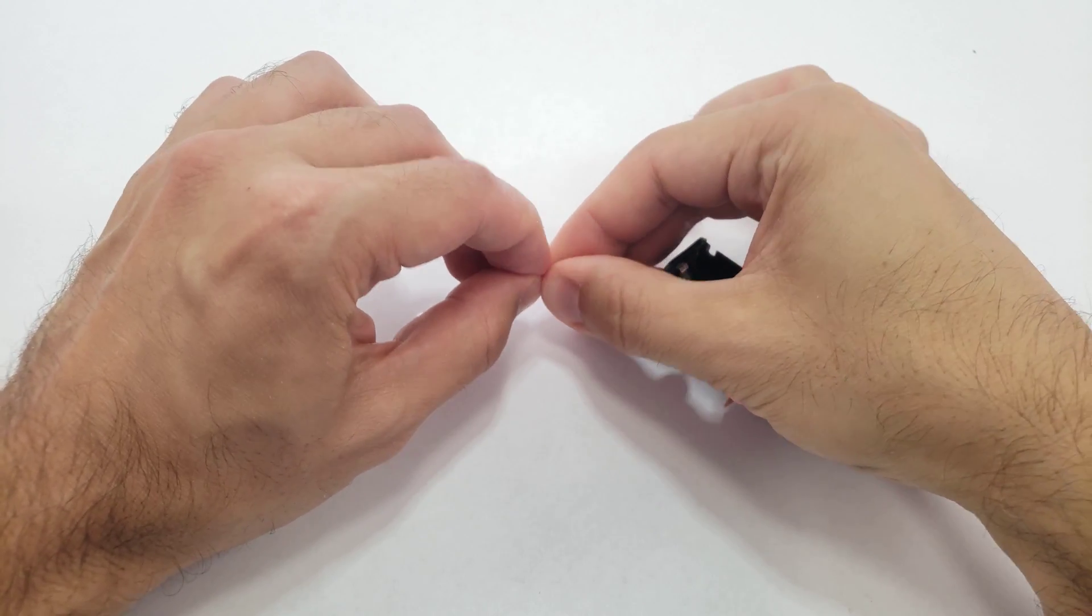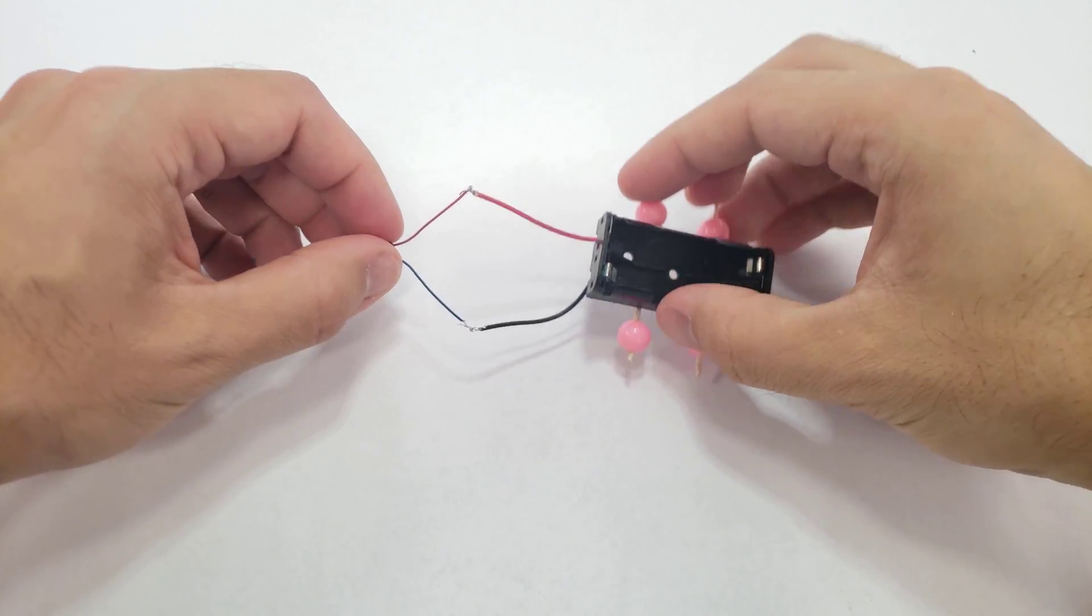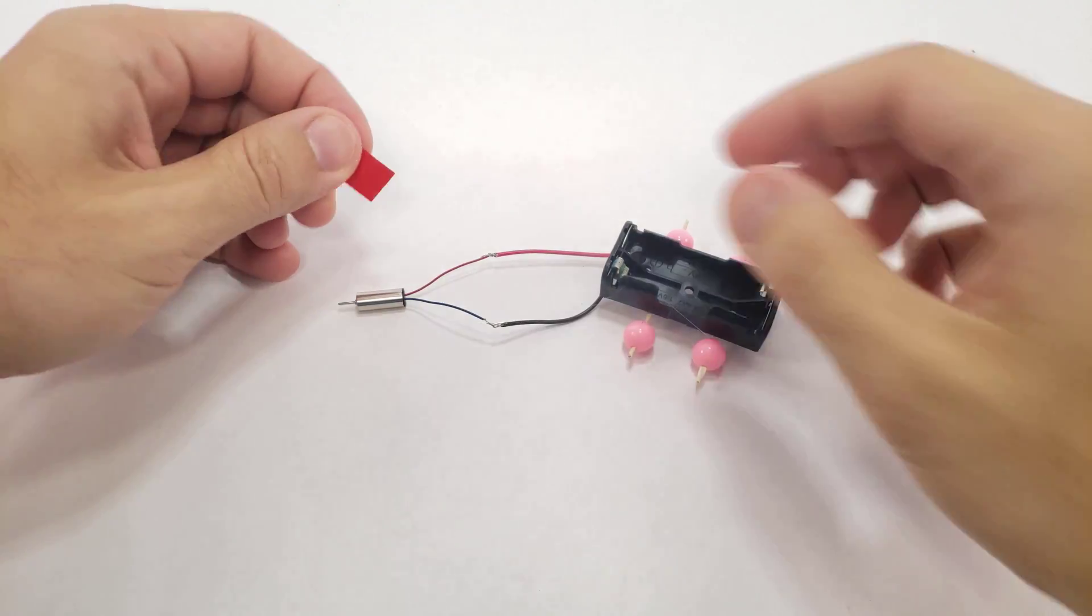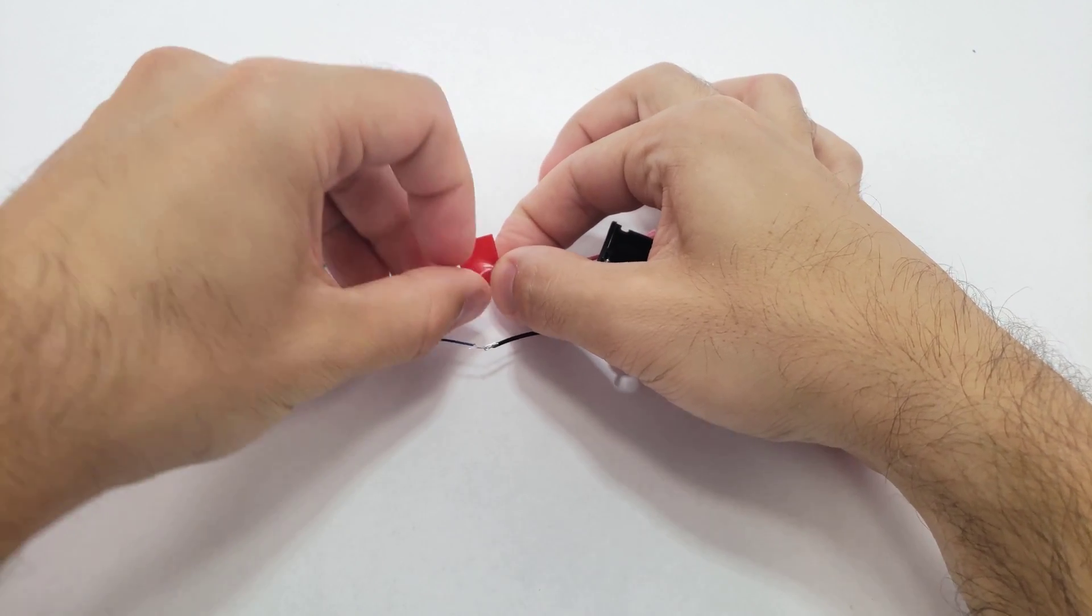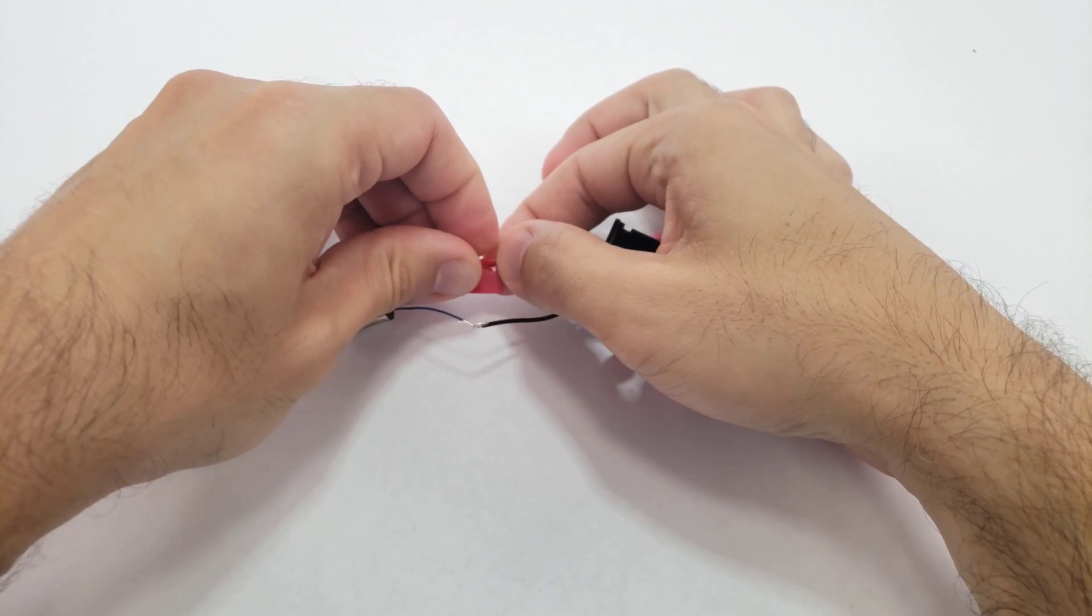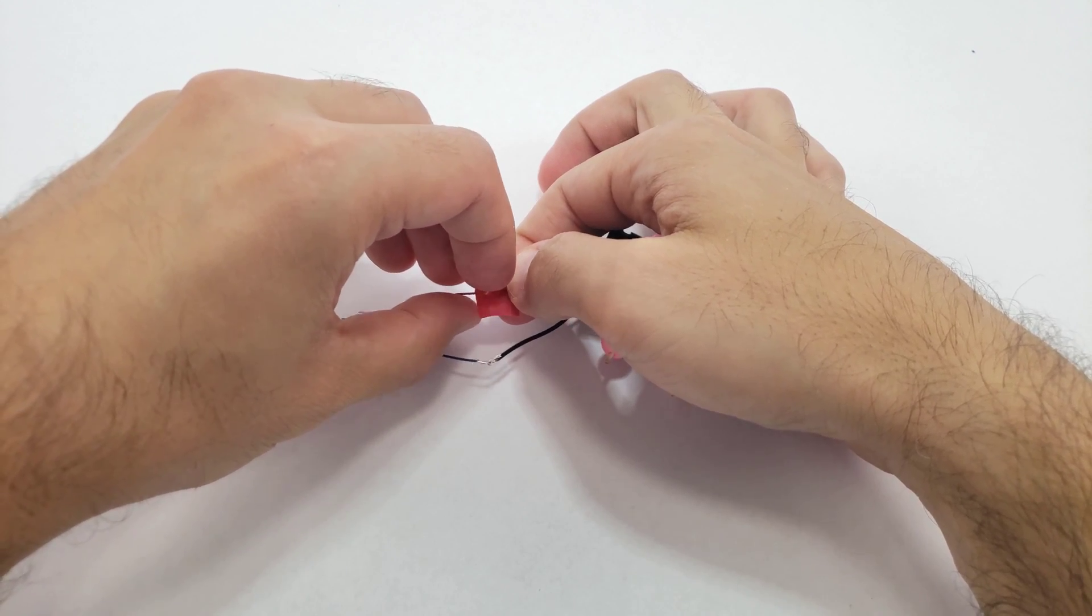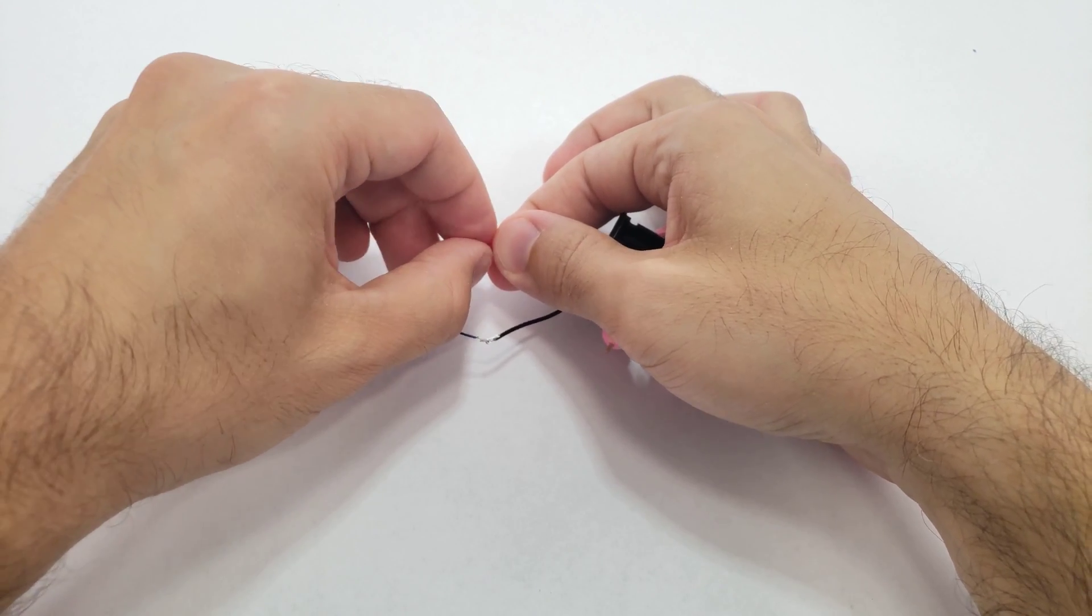If you have a soldering iron available, you can solder the connections to make them stronger. Wrap each connection in electrical tape to prevent short circuits. If you have heat shrink tubing available, you can use that instead, but remember you need to slide it onto the wires before you twist them together.